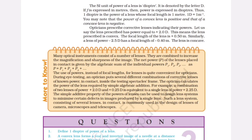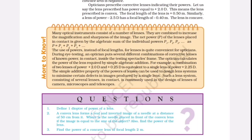Questions: 1. Define one diopter of power of a lens. 2. A convex lens forms a real and inverted image of a needle at a distance of 50 cm from it. Where is the needle placed in front of the convex lens if the image is equal to the size of the object? Also find the power of the lens. 3. Find the power of a concave lens of focal length 2 m.